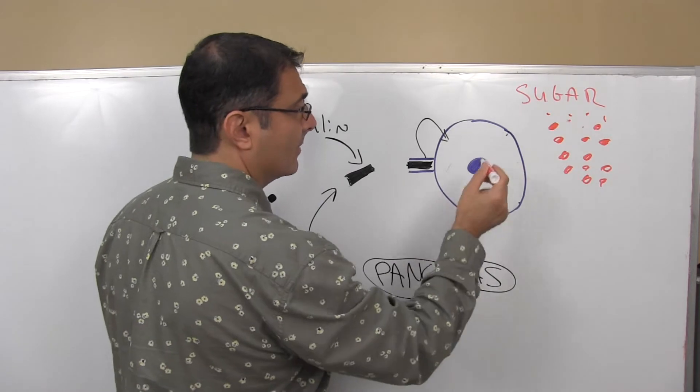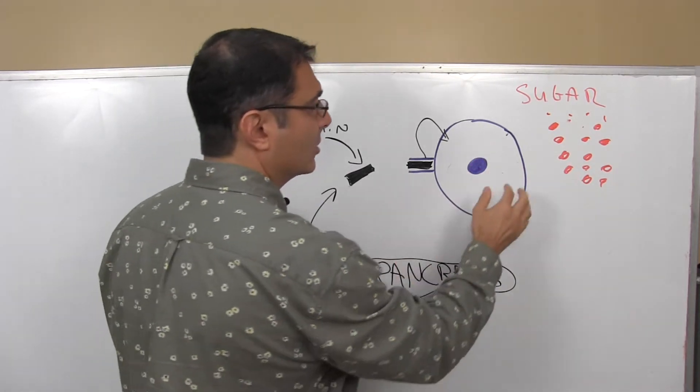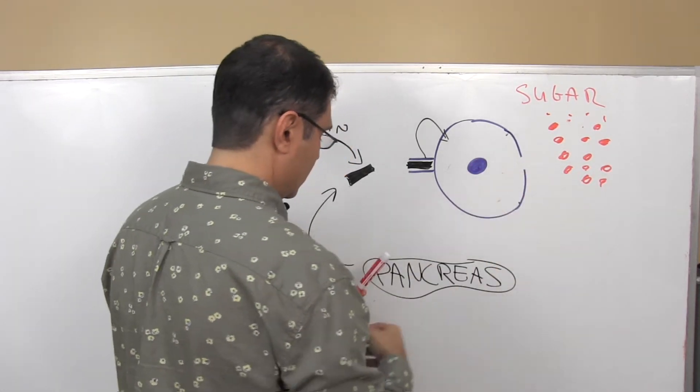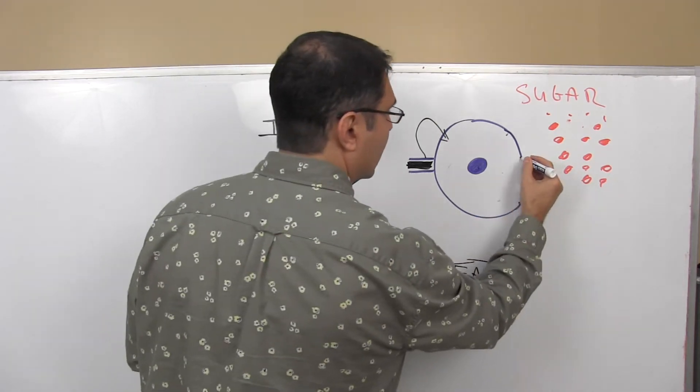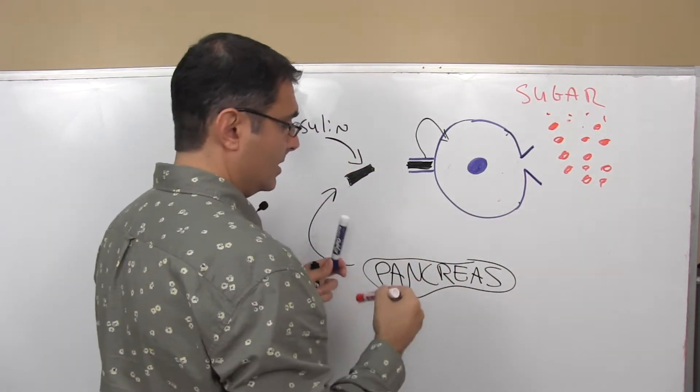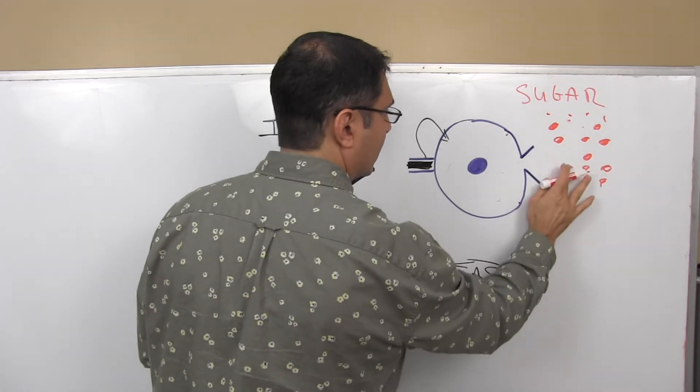So the insulin says, hey, cell, absorb sugar, and only a little bit of the message gets through. So the cell only opens up a little bit, and we only absorb a little bit of blood sugar.